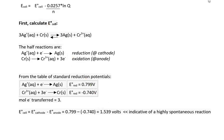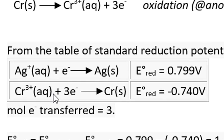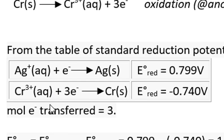The other value we're going to need for the Nernst equation is N, the number of electrons transferred in the reaction. Looking at the two half-reactions, we see that we need to multiply the half-reaction for silver by 3 to balance out the electron transfer. So the moles of electrons transferred in the reaction, or N, is 3.